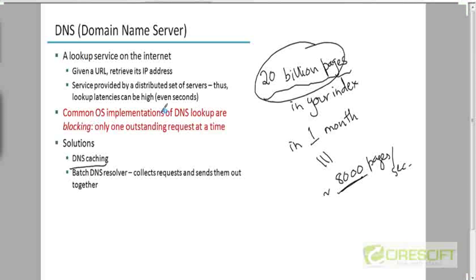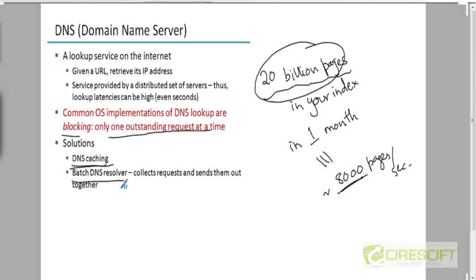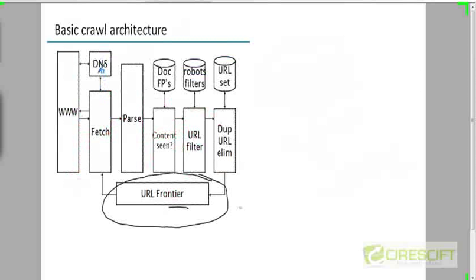Even if you implement DNS lookup in your operating system, the problem is that this service is blocking — only one outstanding request is allowed at a time to the DNS server. That constraint can be overcome by caching. Sometimes there are batch DNS resolvers that collect a set of requests and send them out together. There are ways to speed up this service, which otherwise can be quite time-consuming.